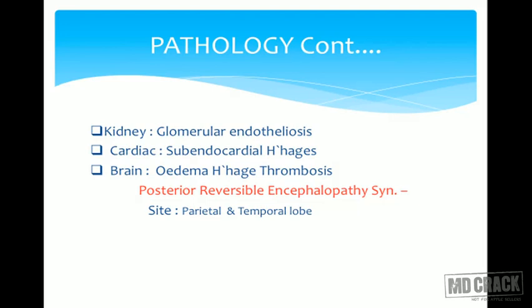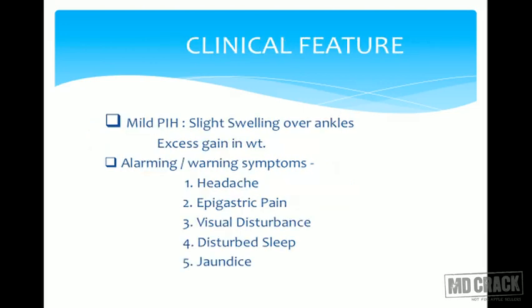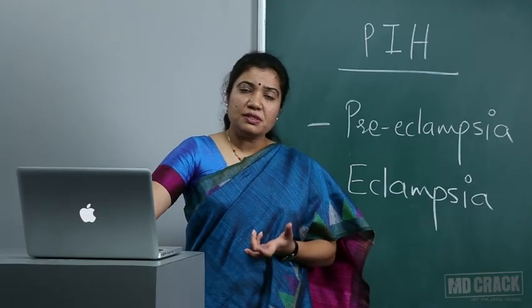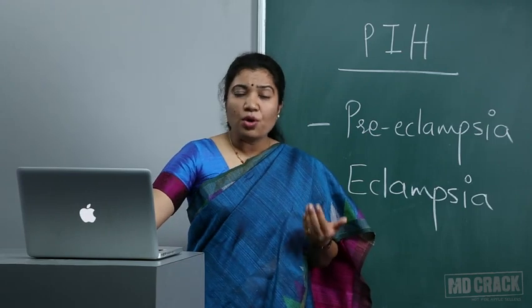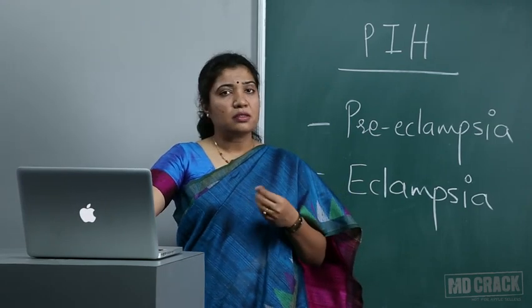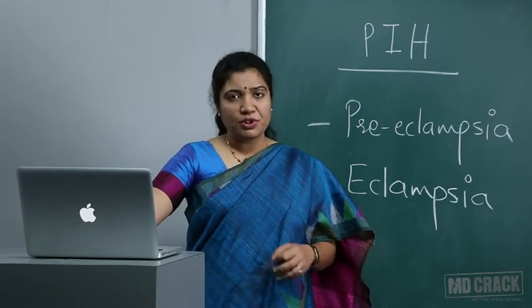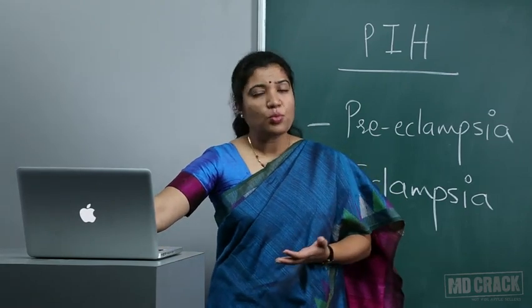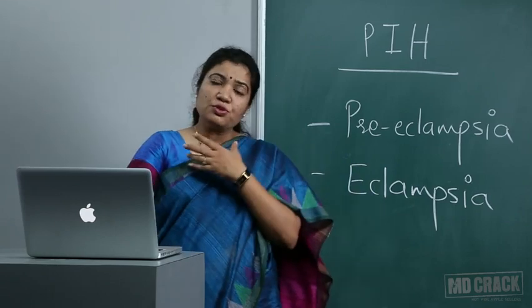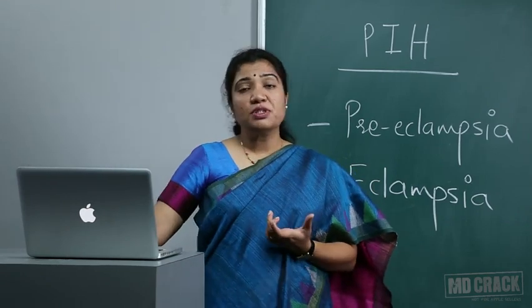Pathological effects on other organs: kidneys — glomerular endotheliosis; cardiac — subendothelial hemorrhage; brain — edema, thrombosis, and posterior reversible encephalopathy syndrome. Clinically, in mild PIH, the patient reports facial edema and swelling on hands — rings, bangles, and chappals getting tight. On examination, weight gain is more than normal, pitting edema all over the body not subsiding after rest, and raised blood pressure.